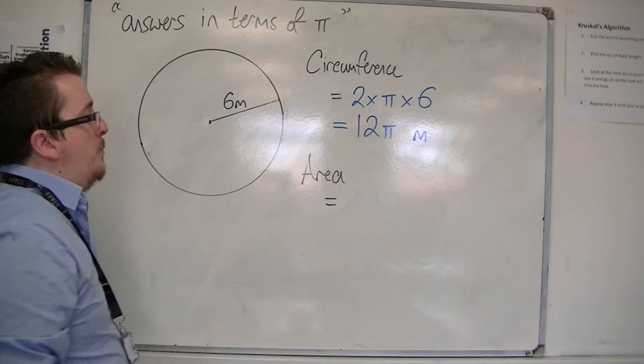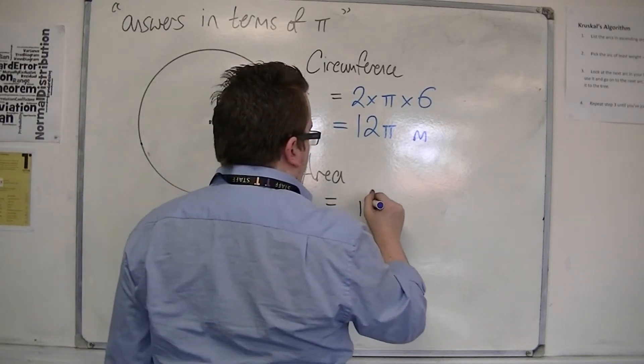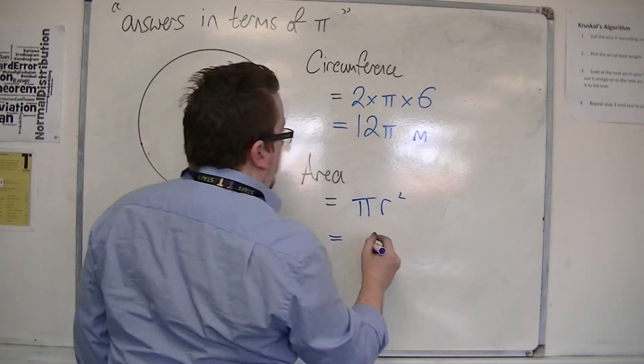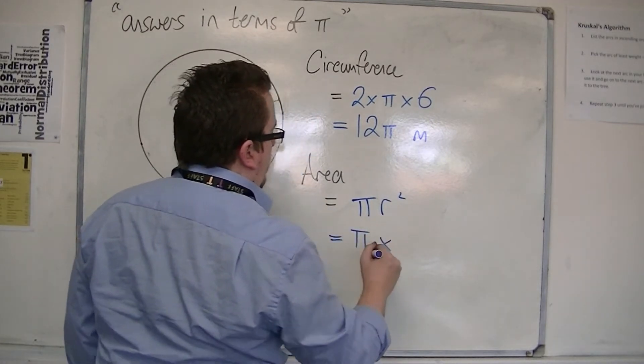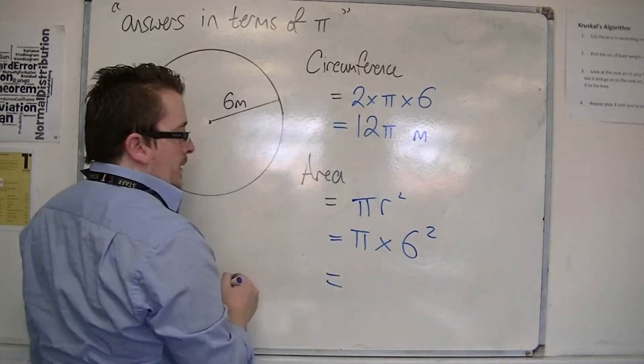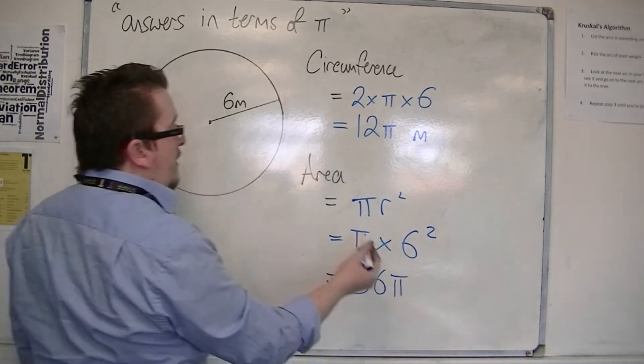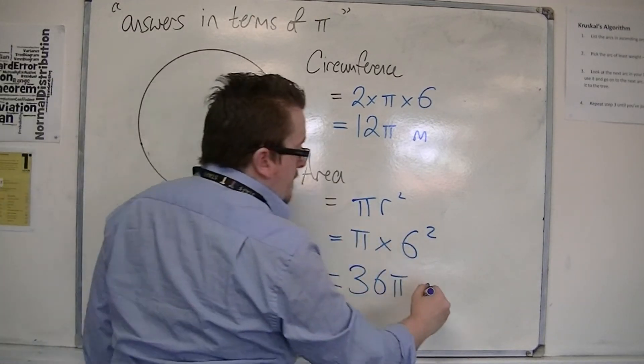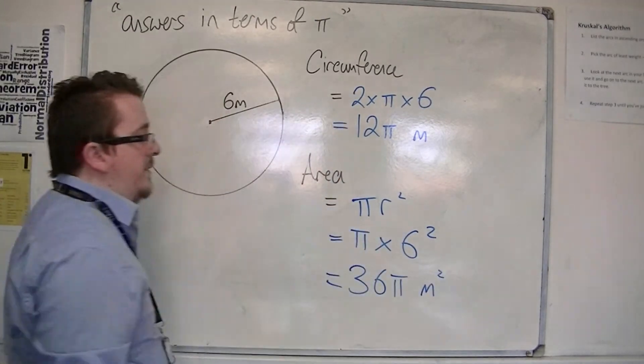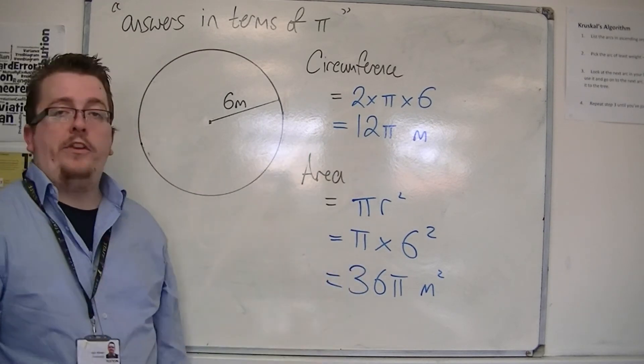It's just making sure you remember the formula. For the area, it was πr². So that's pi times r squared. 6 squared is 36, so that's 36π. And because we're dealing with area in meters, that's meters squared. And that's what it means to leave your answers in terms of pi.